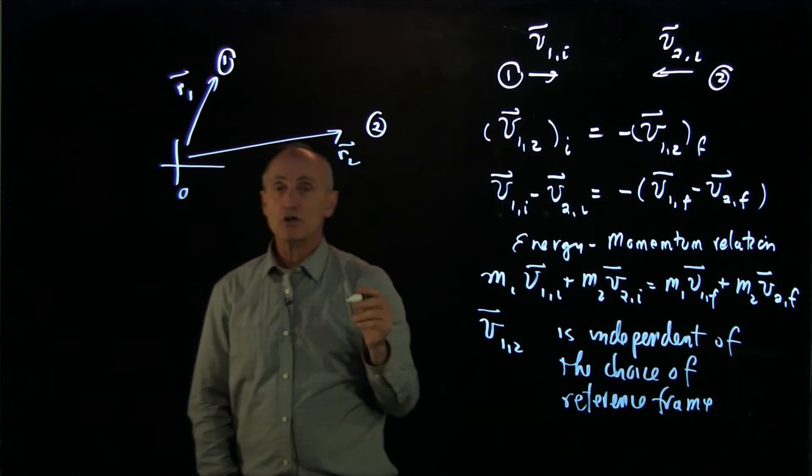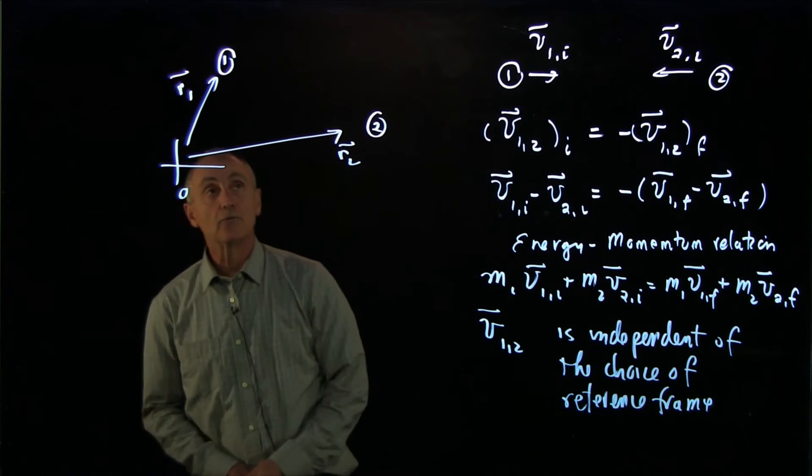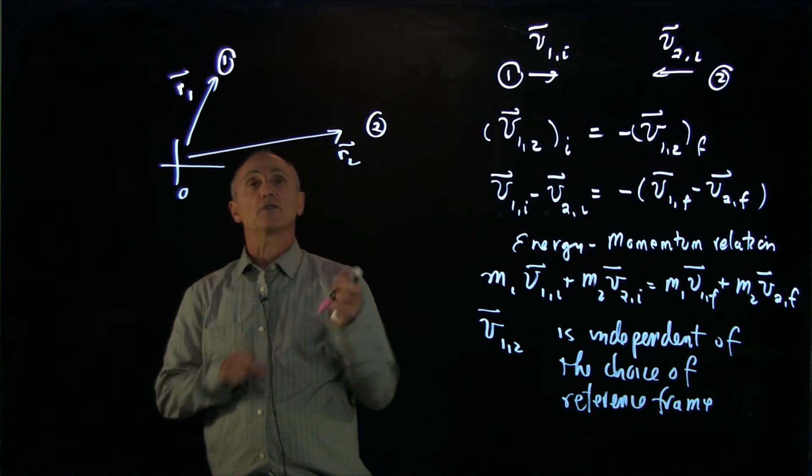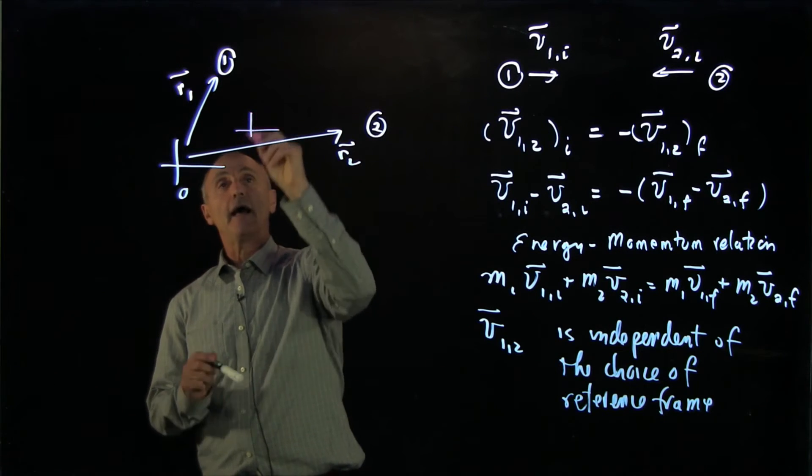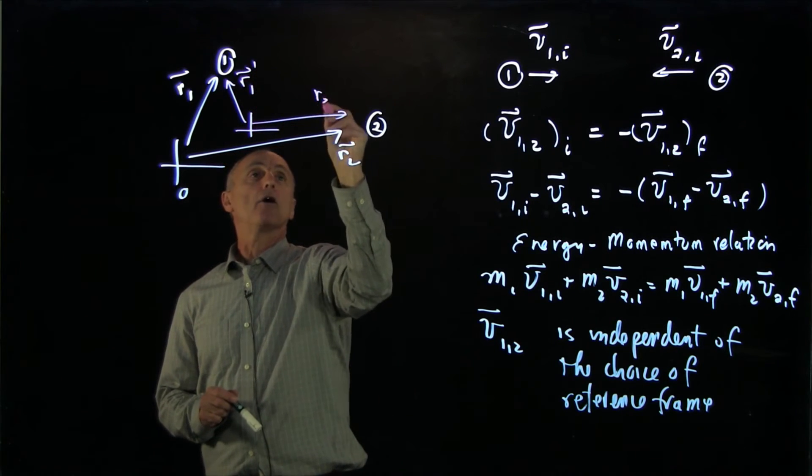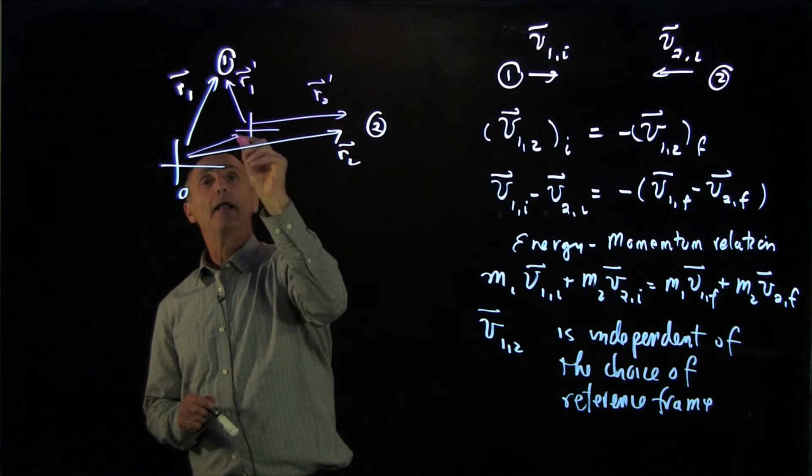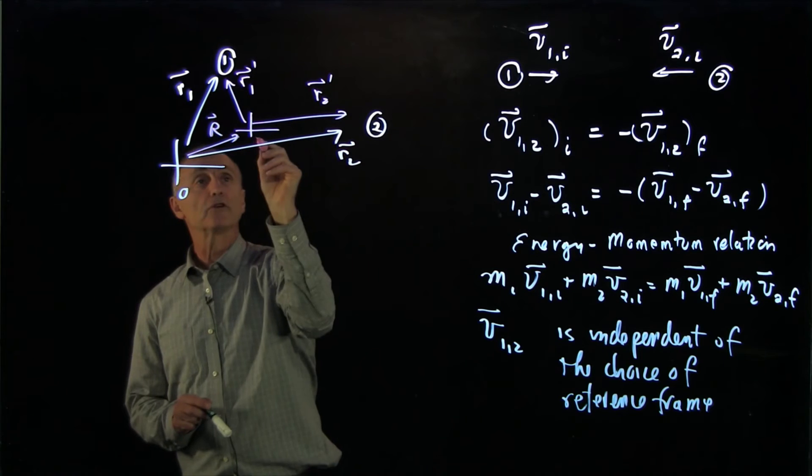And now we want to choose another reference frame. So suppose that we pick a second reference frame, which has maybe some origin over here. And we have the vectors r1 prime and r2 prime.